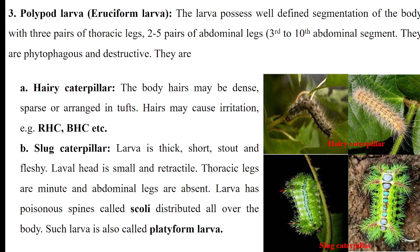In this polypod type, first is the hairy caterpillar. This hairy caterpillar is a group — these caterpillars have dense hairs on their body. They may cause irritation when you touch them, because they secrete some poisonous chemicals. This group includes Bihar hairy caterpillar, red hairy caterpillar, Gujarat hairy caterpillar, etc.